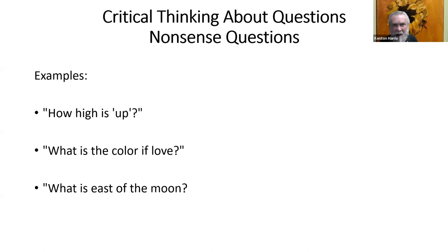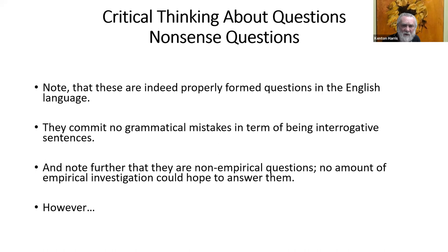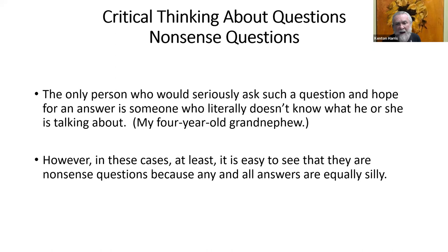To ask what is east of the DM building, what is east of Los Angeles, or what is east of Japan — all of those questions make perfectly good sense. But what is east of the moon? There's something conceptually wrong with that. Nothing grammatically wrong, but something conceptually wrong. These are properly formed questions in the English language committing no grammatical mistakes. And note that they are not empirical questions — no amount of empirical investigation could hope to answer them.